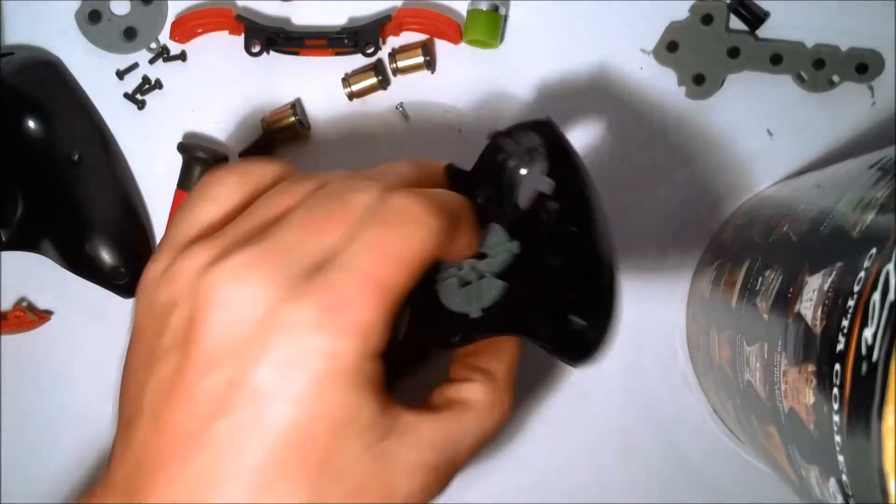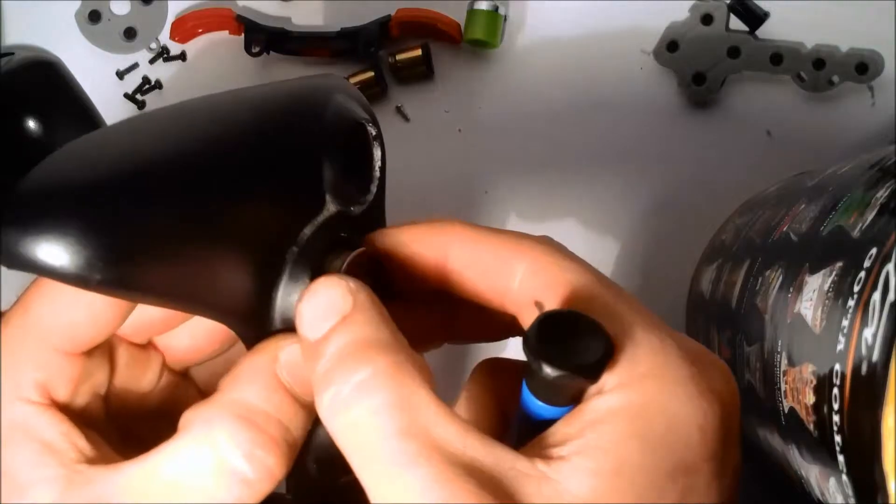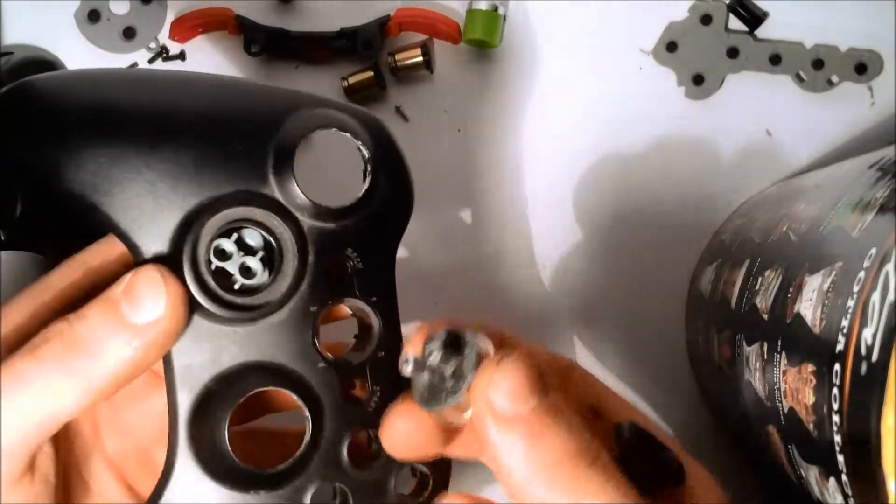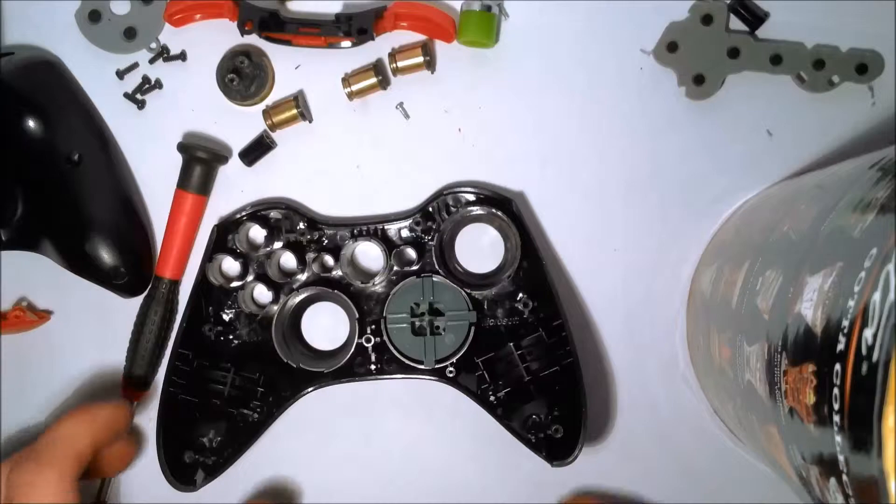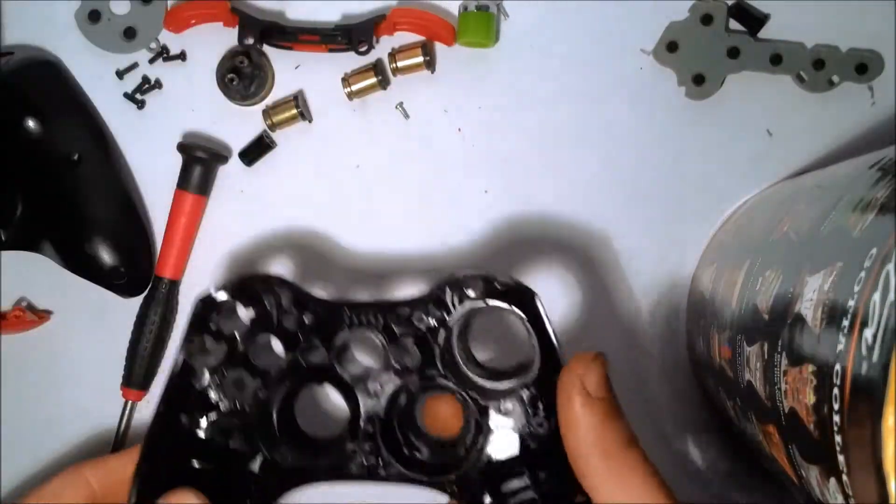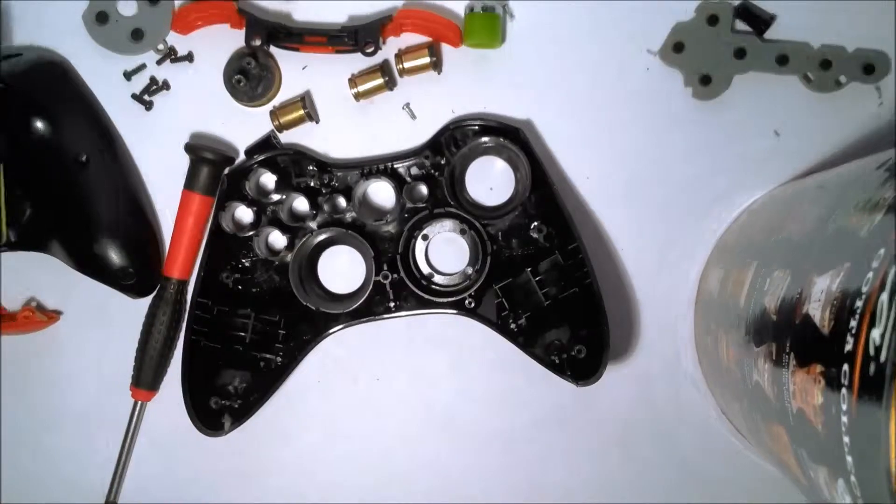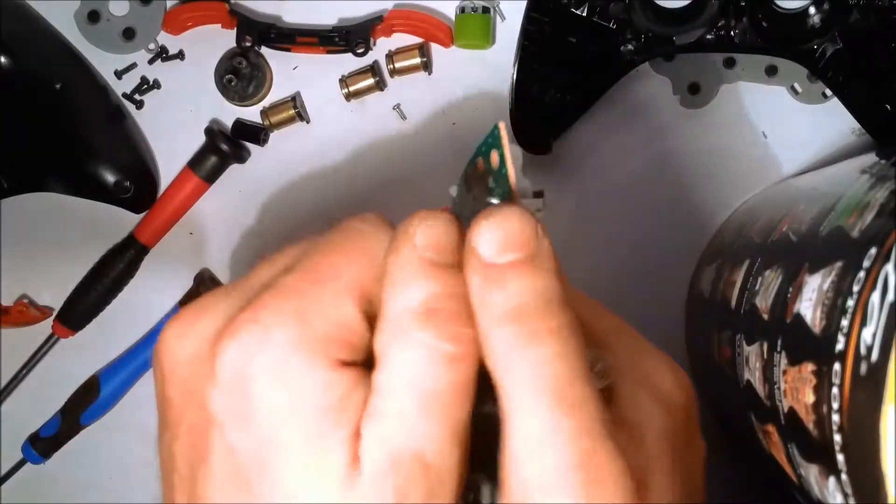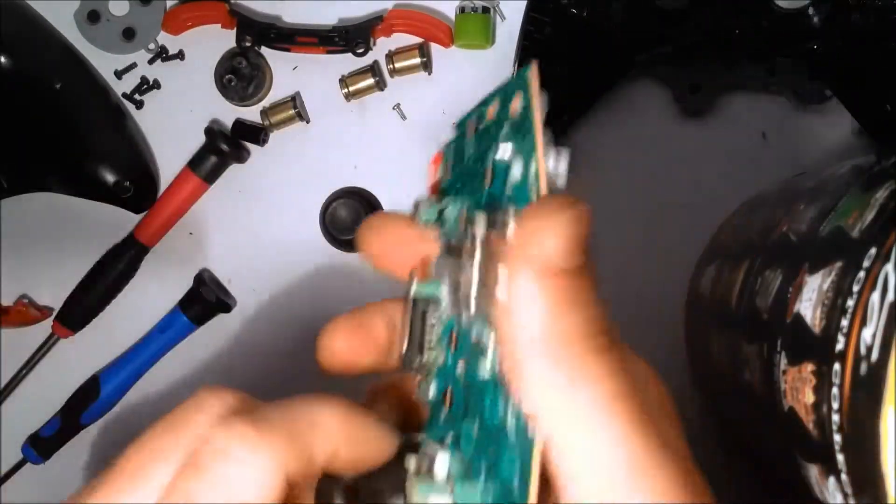Next, the D-pad just pulls apart easily, just like that. Next, to remove the thumbsticks, just pull them away from the board. They come out very easily.